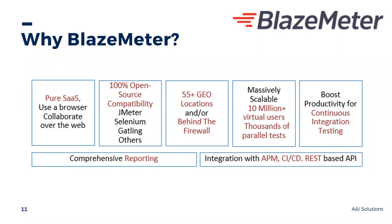BlazeMeter is going to be our testing tool. It's pure SaaS — you can use a browser to calibrate over the web. It has 100% open source compatibility and uses most of the languages you're used to. It has over 55 geolocations and you can run it behind a corporate firewall. It's massively scalable — you can run 10 million virtual users. It facilitates continuous testing leading to superior test coverage at speed. Its reporting is highly comprehensive, and its APM integration lets you see server-side KPIs as well as front-side APIs. The whole platform is REST-based, so you can execute anything through a REST call.